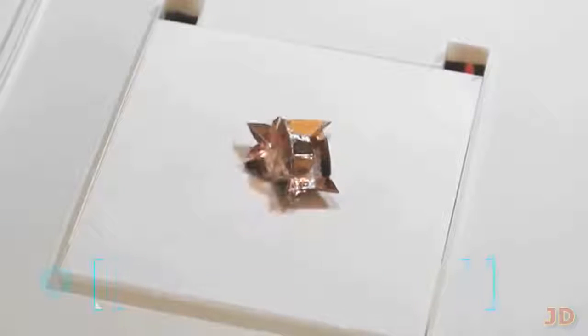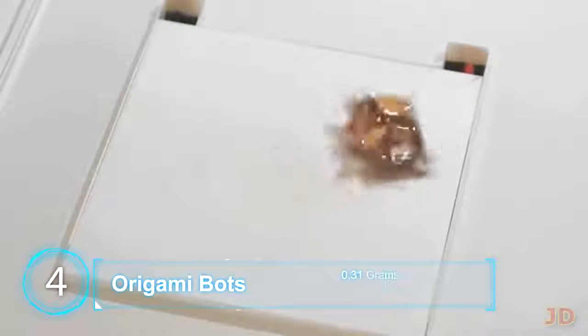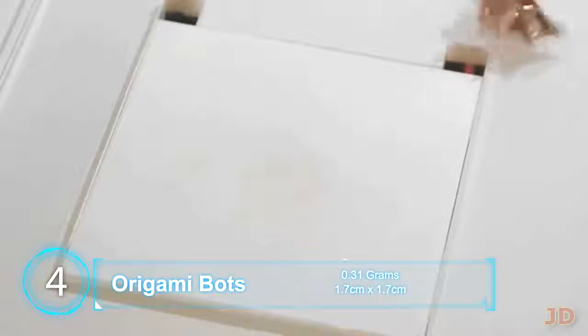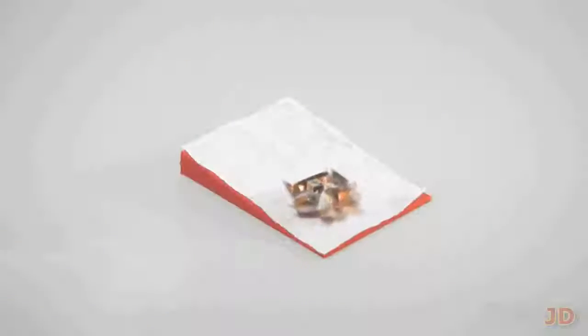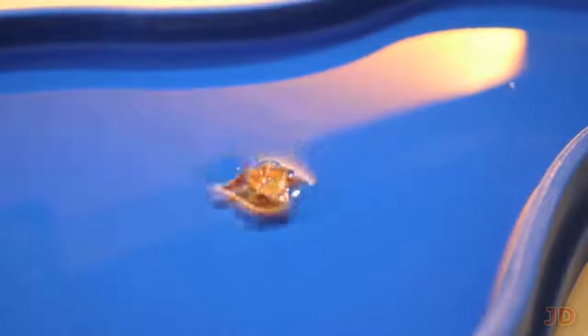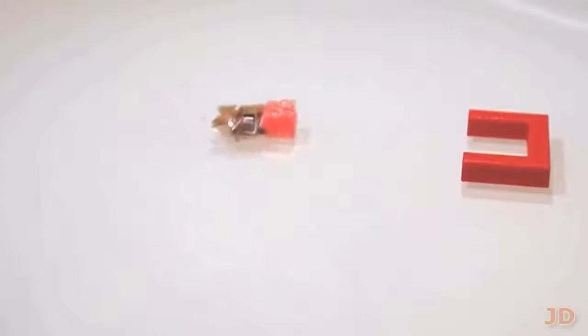At number 4, Origami Robots. Created by MIT, this bot self-assembles through a heating process and then can run, carry objects, and even swim. Even though the bot has to be remotely controlled by magnetic fields, it will likely be automated in the future. The bots will likely be used for inspection in small areas such as pipelines or even machinery.